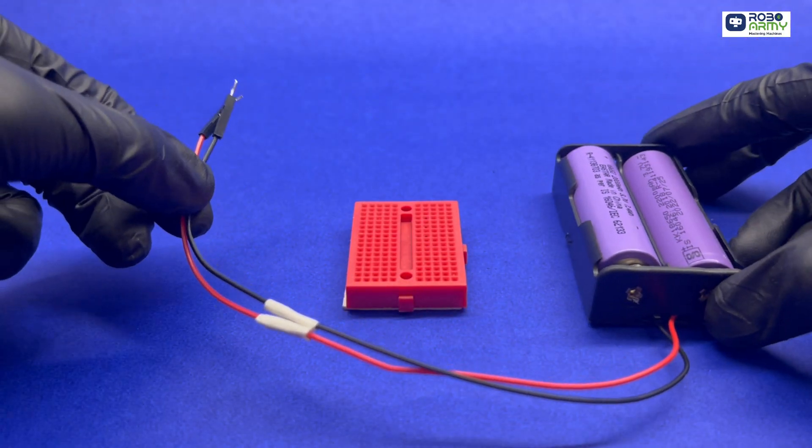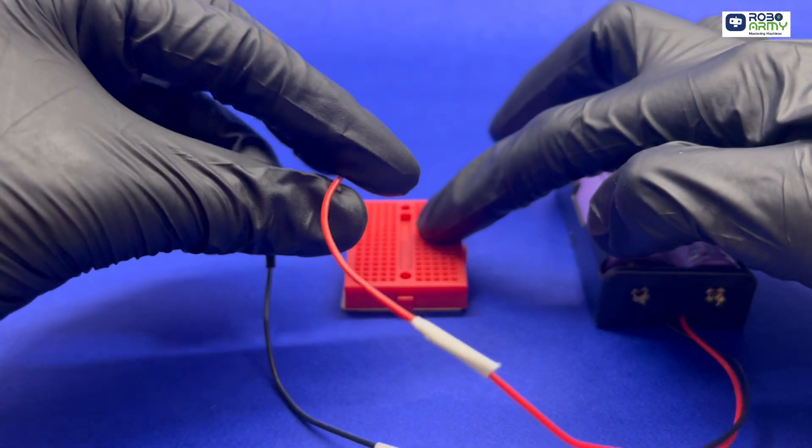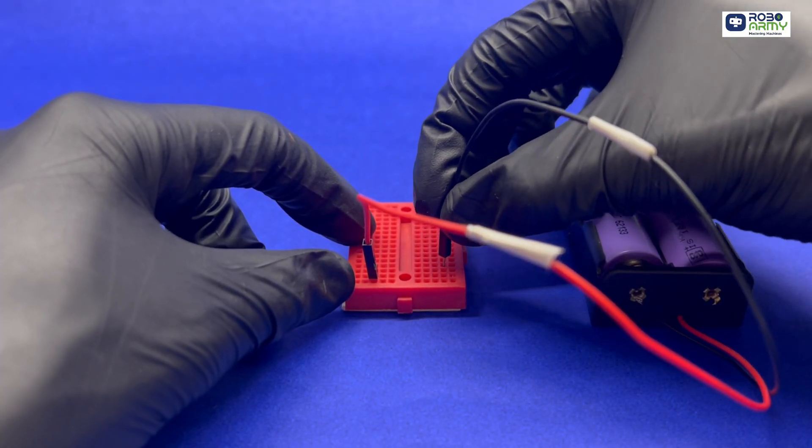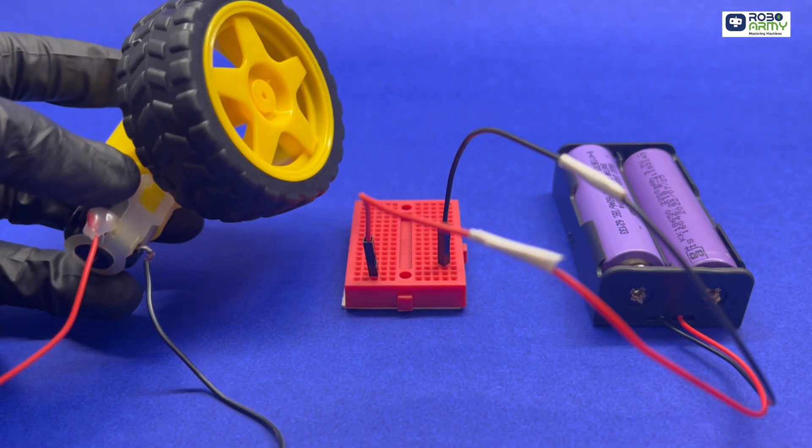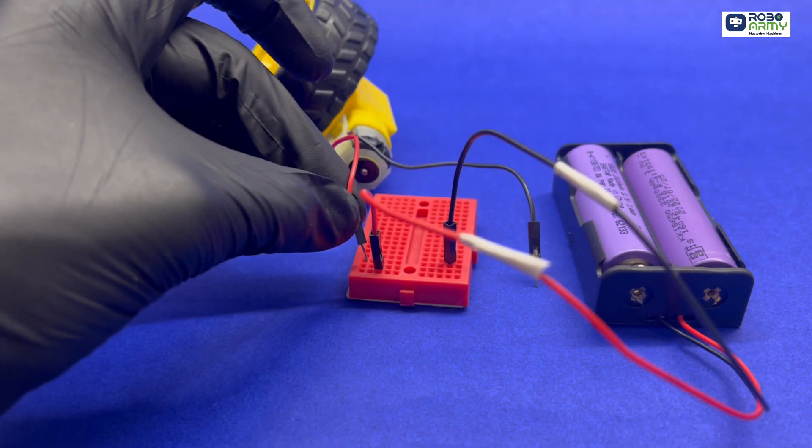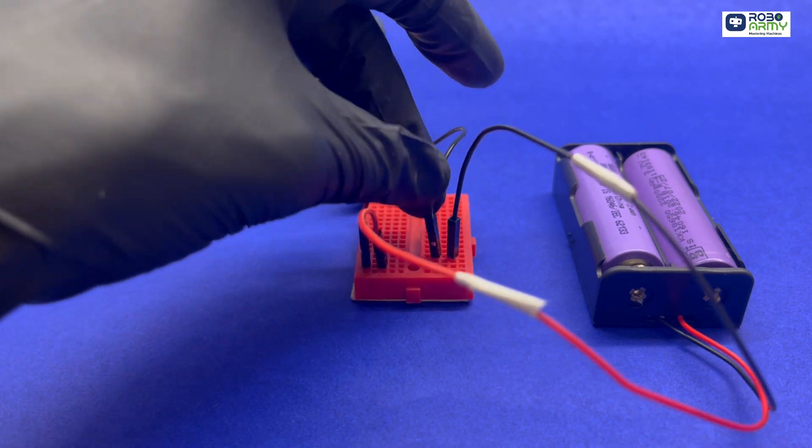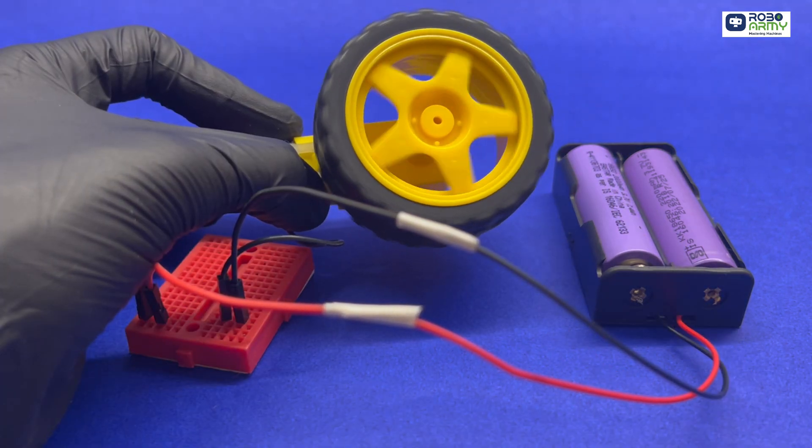Now understand the circuit. Connect the positive wire of the battery holder in any row and negative, that is the black wire, in a separate row. Now connect motor wires. One wire to the row with the positive battery wire, another wire to the row with the negative battery wire. And see the motor spins.